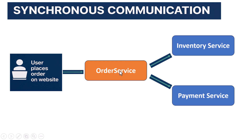Payment. So it sends another synchronous call, this time to the payment service, asking to charge the customer's card. If that succeeds, the order service confirms the purchase. This whole process relies on each service being available and responsive in real time. If inventory is slow, everything slows down. If payment is down, the entire order fails.